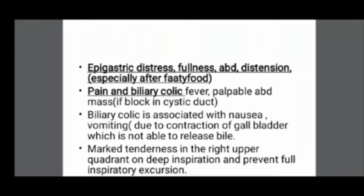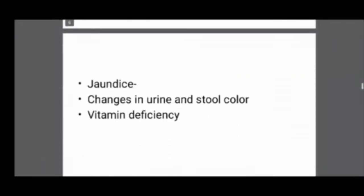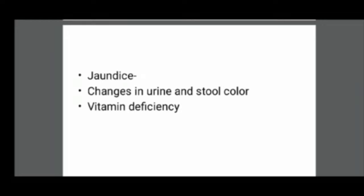There will be marked tenderness — pain in the right upper quadrant on deep inspiration — which prevents full inspiratory excursion. Due to obstruction of bile, the person will show jaundice, meaning yellowish discoloration of the skin and mucous membrane, changes in urine and stool color — urine will be dark, stool will be very light. In advanced cases, there may be deficiency of fat-soluble vitamins A, D, E, and K.